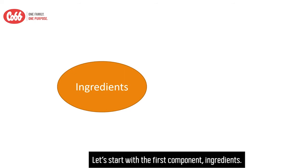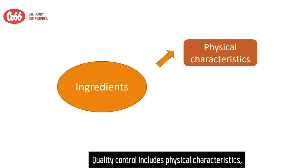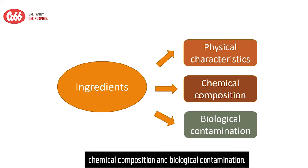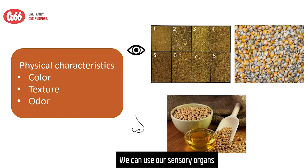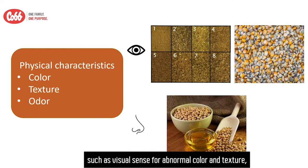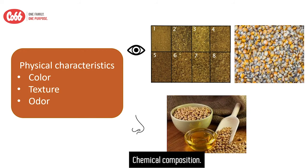Let's start with the first component: ingredients. Quality control includes physical characteristics, chemical composition, and biological contamination. Physical characteristics include texture, color, and odors. We can use our sensory organs to detect abnormal ingredients — eyesight for abnormal colors and texture, and smelling for abnormal odors such as rancidity in oils.